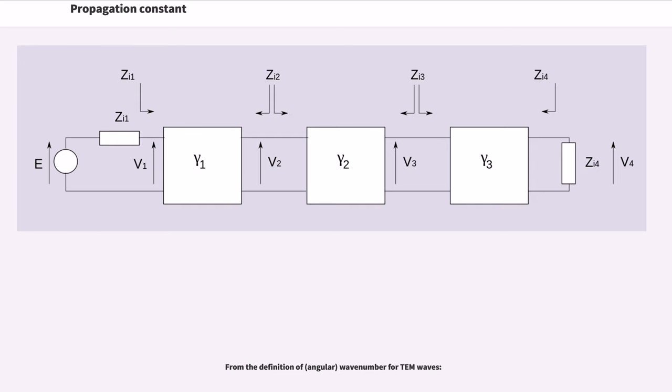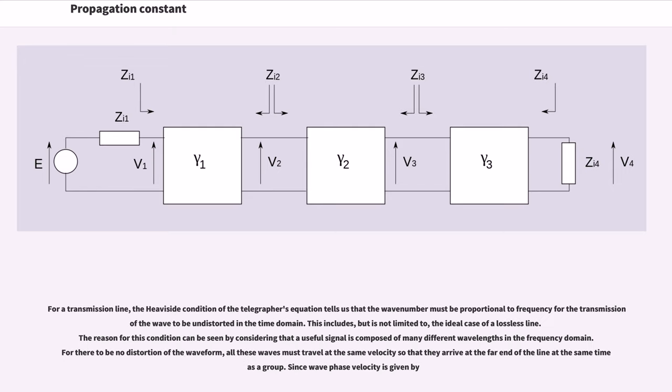From the definition of wave number, beta = 2*pi/lambda for plane waves. For a transmission line, the Heaviside condition of the telegrapher's equation tells us that the wave number must be proportional to frequency for the transmission of the wave to be undistorted in the time domain. This includes, but is not limited to, the ideal case of a lossless line. The reason for this condition can be seen by considering that a useful signal is composed of many different wavelengths in the frequency domain. For there to be no distortion of the waveform, all these waves must travel at the same velocity so that they arrive at the far end of the line at the same time as a group.